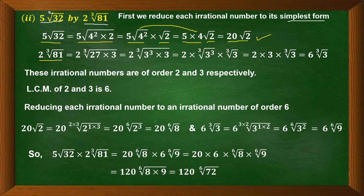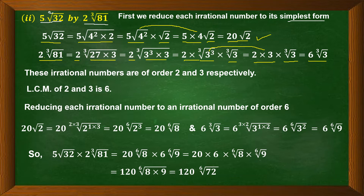Now for 2 into cube root of 81: 81 can be written as 27 into 3, and 27 further as 3 cube into 3. So we have 2 and cube root of 3 cube into 3, which splits to 2 into cube root of 3 cube into cube root of 3. Cube root of 3 cube is 3, giving 2 into 3 into cube root of 3, which equals 6 cube root of 3. These two irrational numbers have order 2 and order 3 respectively, so we take LCM of 2 and 3, which is 6, and reduce each to order 6.